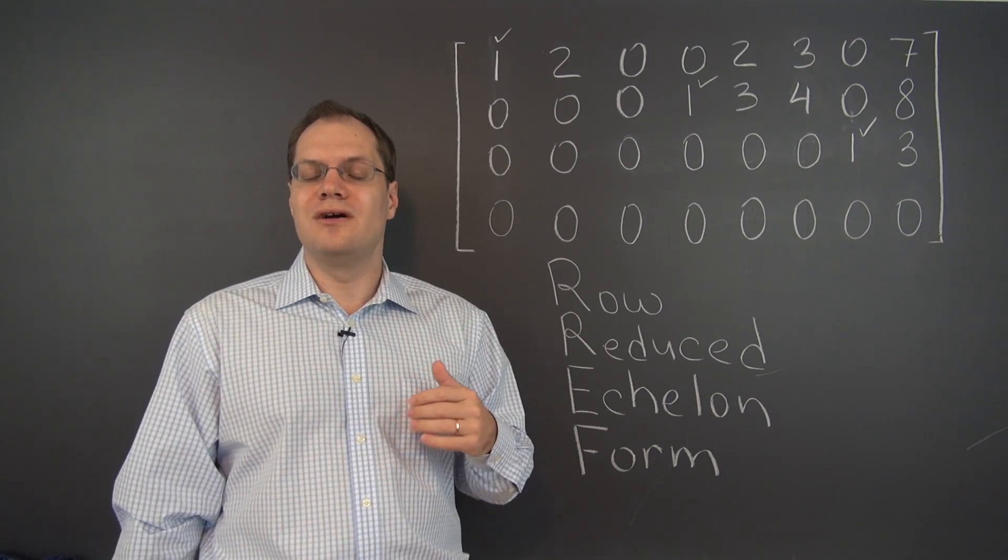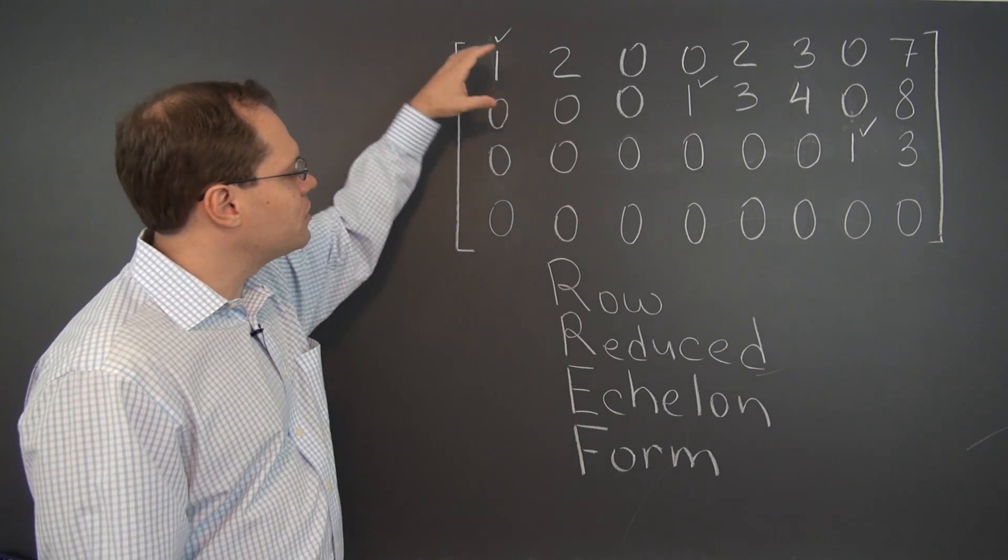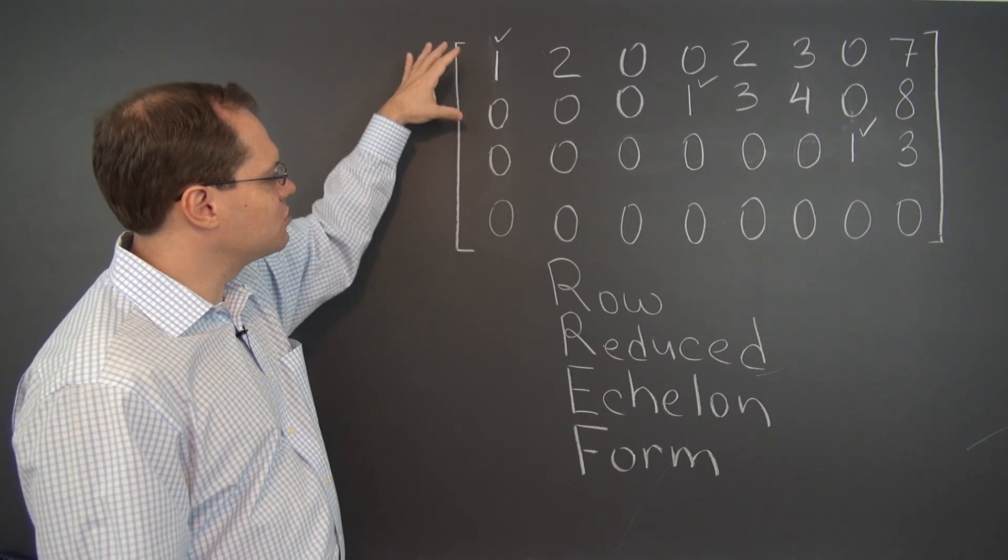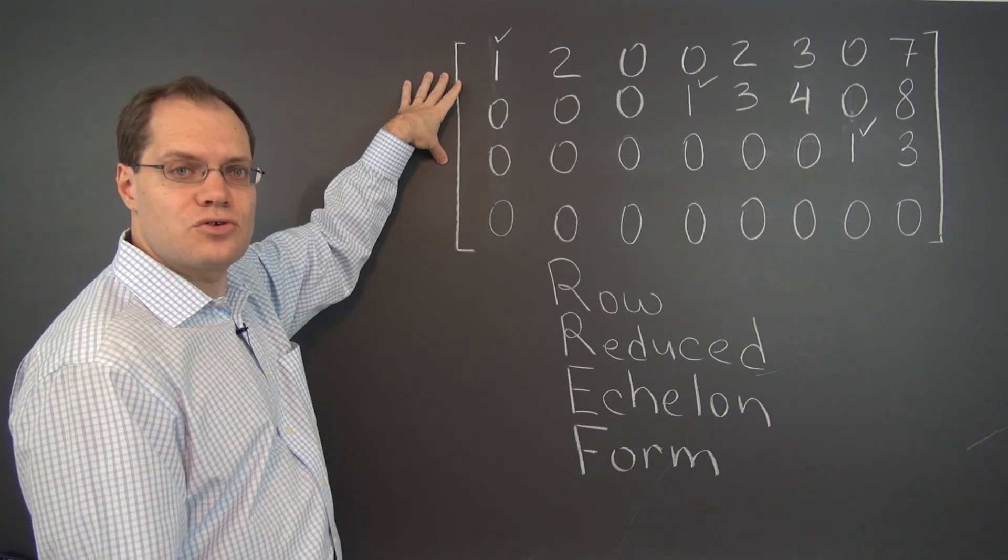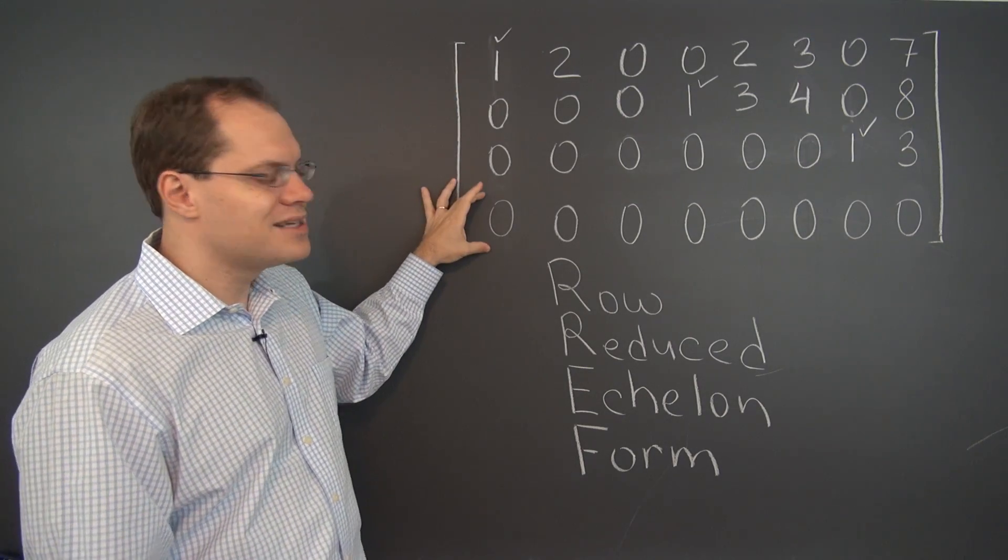Now from the row point of view, it's even a little bit easier to describe. When you look at rows, you will notice that there are some rows that are not zero rows, and then there are some rows that have all zeros, and those would be called zero rows.